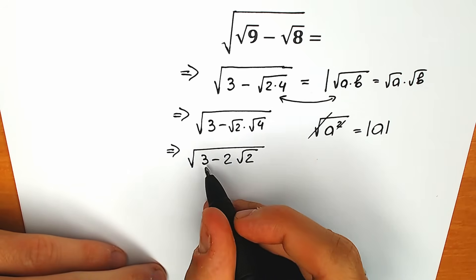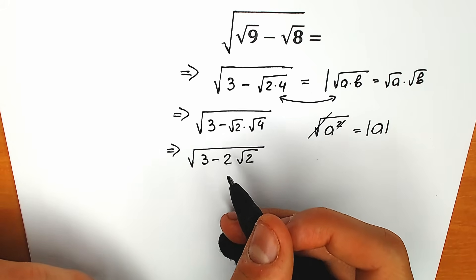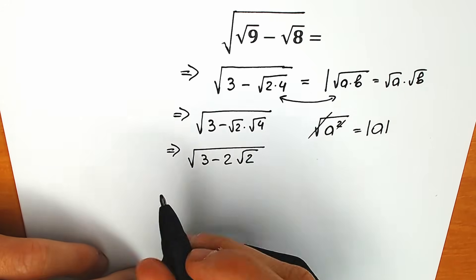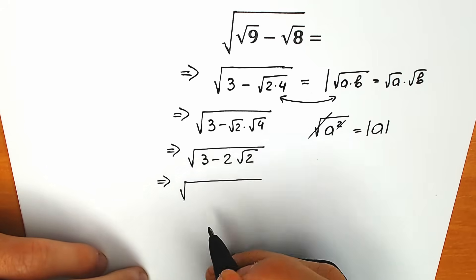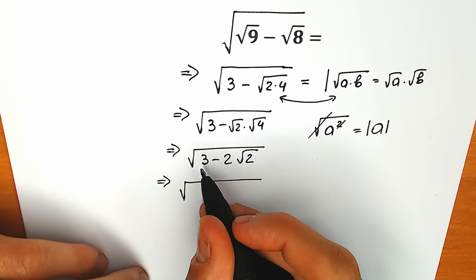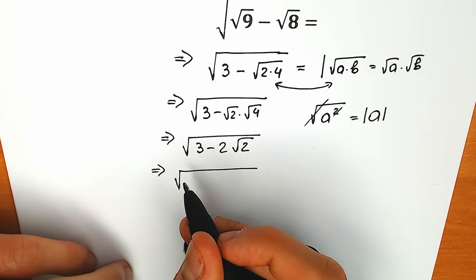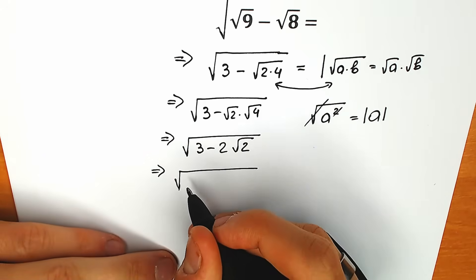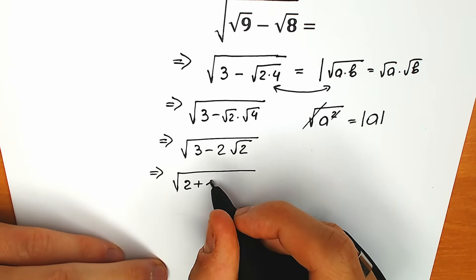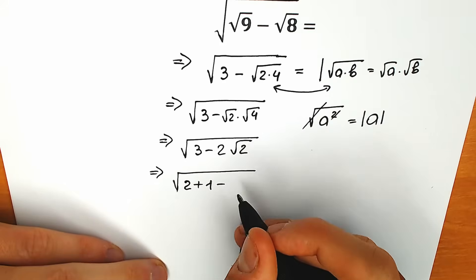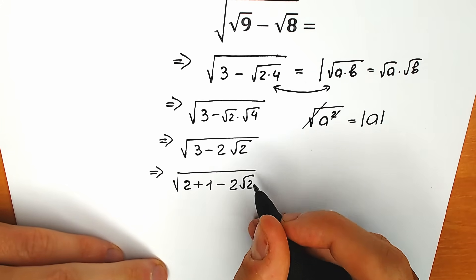So right now, instead of 3 minus 2 square root of 2, let's try to create a perfect square. Instead of 3, let's write 2 plus 1. So we have 2 plus 1 minus 2 square root of 2.